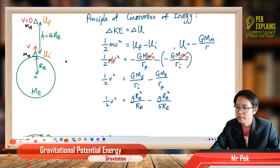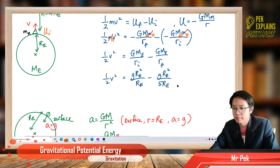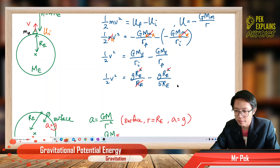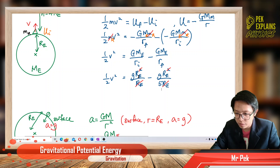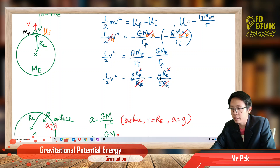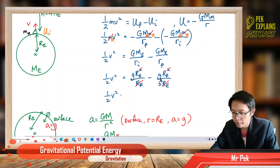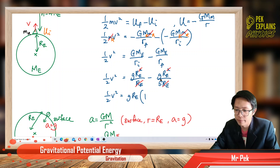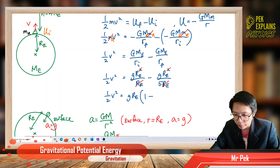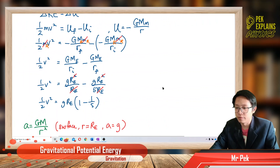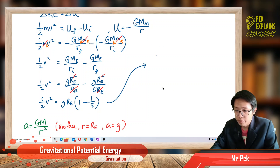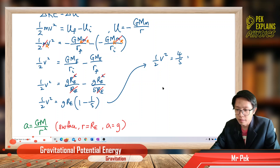We can cancel R_e and factorize out g R_e. So ½v² = g R_e times (1 minus 1/5), which gives ½v² = (4/5) g R_e.